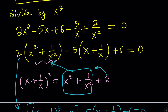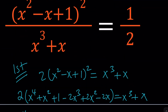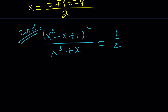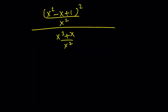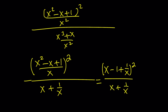That would be the first method. Now let's look at the second method and see how it differs. For my second method, the equation is x squared minus x plus 1 squared divided by x cubed plus x equals 1 half. Since this equation is symmetric, we can divide the numerator and denominator by x squared directly. The bottom simplifies to x plus 1 over x, and the numerator becomes x minus 1 plus 1 over x squared, divided by x plus 1 over x, equals 1 half.